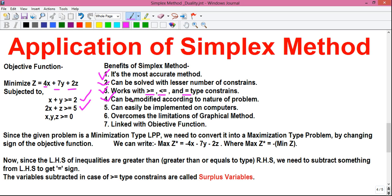Benefit number 4. The simplex method can easily be modified according to the nature of the problem. Nature means the type of the objective function. Here, the type of the objective function is of minimization type, mean z. Also, if the objective function is of maximization type, that can also be solved by the simplex method.